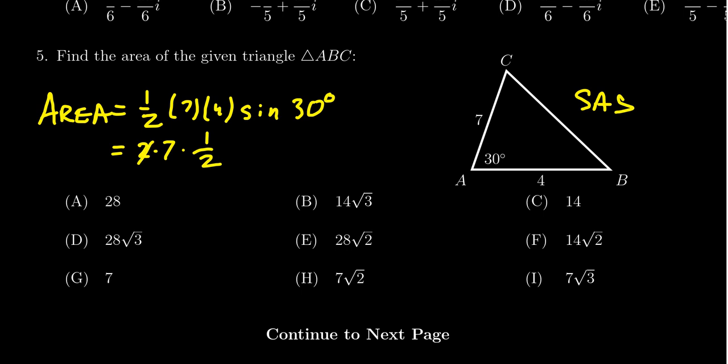So the two and the one half cancel out, and we see that the area of the triangle is going to be seven, so the correct answer is G.